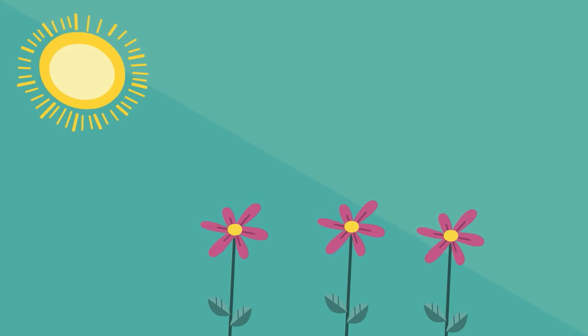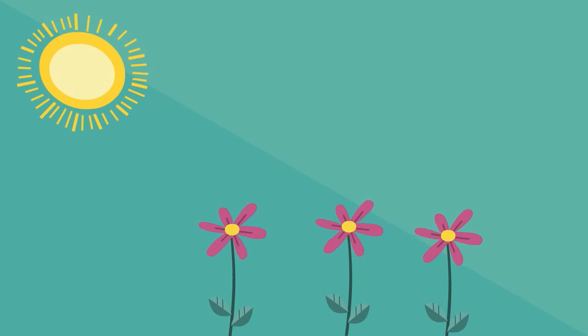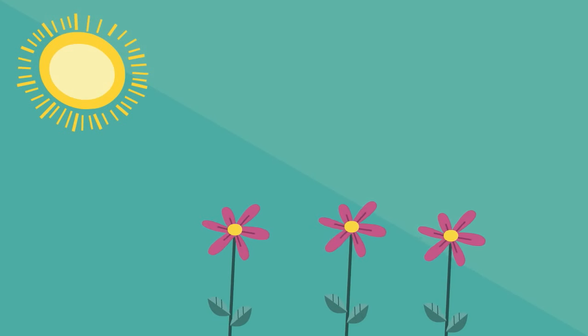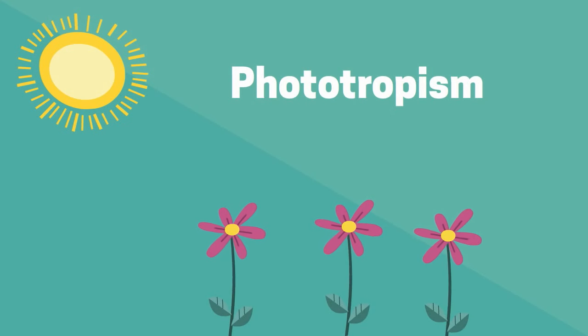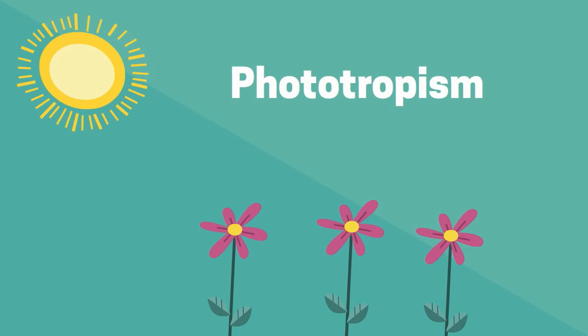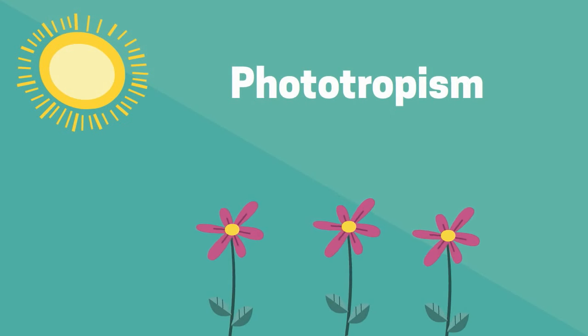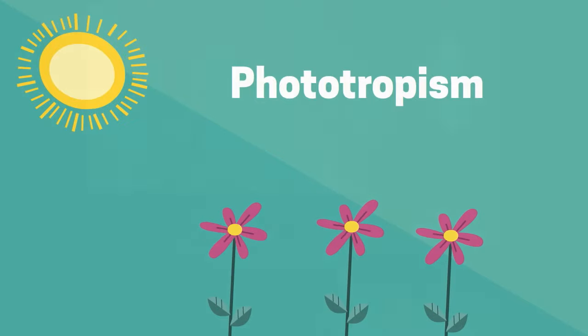Plants also respond to light. When a plant exhibits a response towards light it is called phototropism. The leaves, stems, and flowers of plants grow towards the light. Take a look at these plants growing towards light.